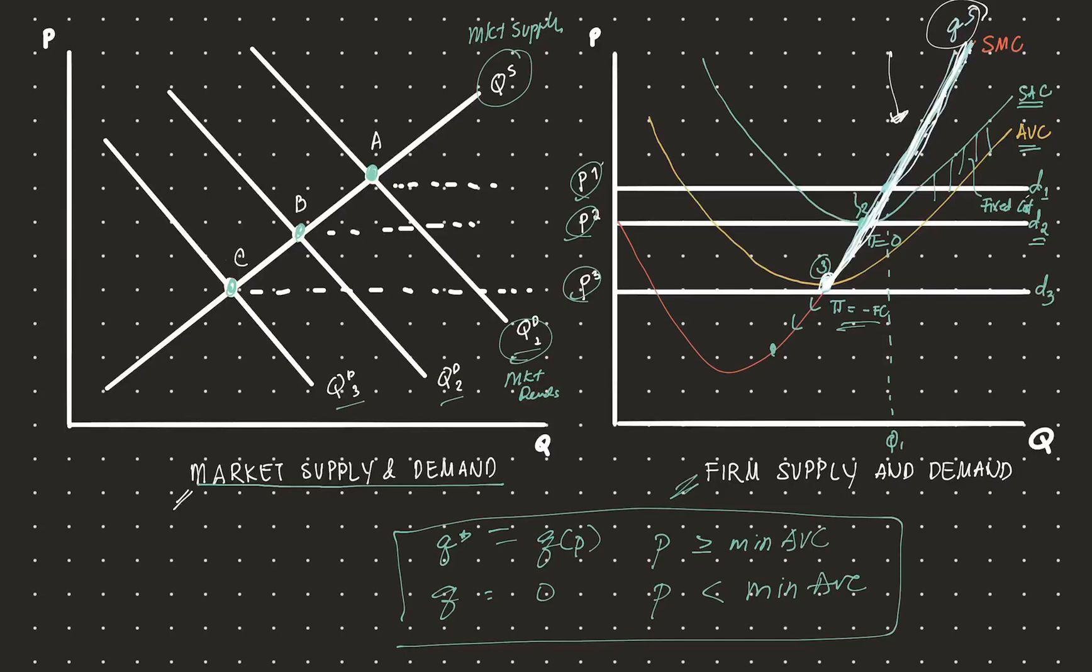We have minimum average cost here at 0.3, so all points above that point are part of the supply curve. That's a brief review of how the firm derives its individual supply curve.